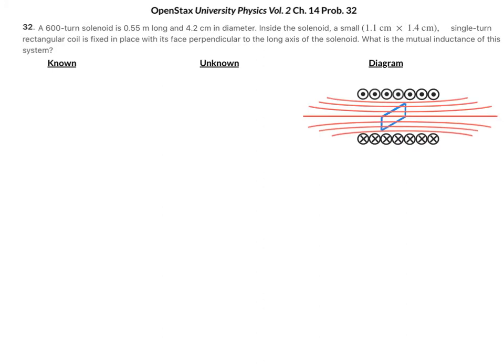So here I already drew the diagram, and let's just write down our knowns and unknowns. We know that the solenoid is the thing that has a current going through it, so I'm going to call that the number of turns in the primary. The solenoid is the primary because there is current going through it. The number of turns is 600, and the length of the solenoid is 0.55 meters.